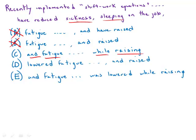Looking at D, we get a verb: 'lowered fatigue and raised.' If we look at D in isolation — 'lowered fatigue and raised blah blah blah' — it would look like we were putting verbs in parallel, and indeed if we got rid of the phrase 'sleeping on the job,' we would have 'reduced sickness, lowered fatigue, and raised productivity,' which would be correct parallelism. The trouble is that we have 'sleeping on the job' in there — so we have 'reduced sickness, sleeping on the job' — and that's incorrect.